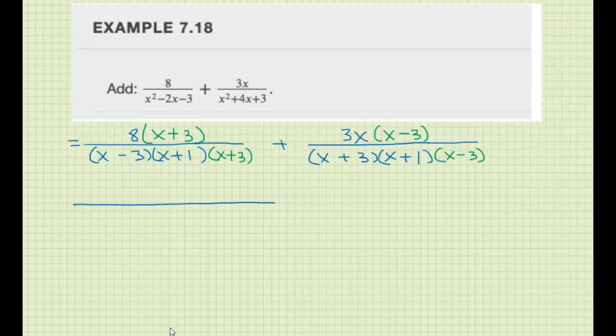Now we're going to combine them. Write the lowest common denominator under a big fraction bar, and now we're going to distribute the 8 - we get 8x plus 24. We're going to distribute the 3x - we get 3x squared minus 9x.